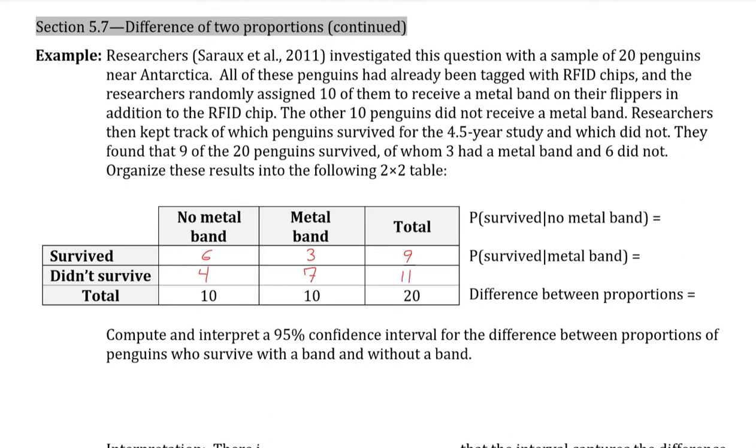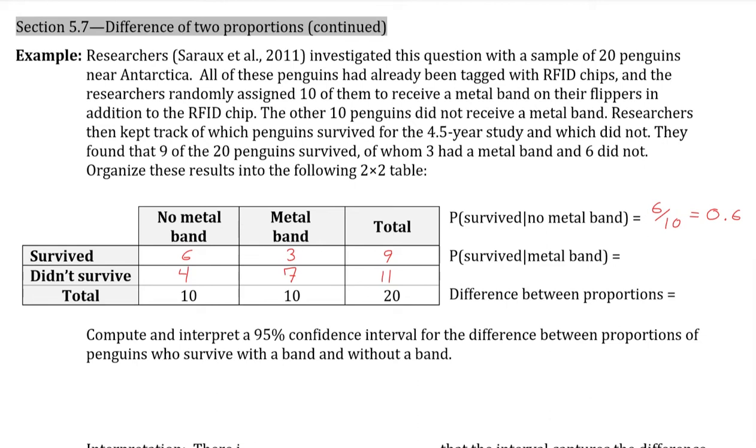On the right side here, we have a few probabilities. We have the probability of survived given no metal band, or on the condition of having no metal band. That means of the 10 individuals with no metal band, how many survived, which is 6 out of 10, or 0.6. For those that survived given metal band, we then have those 10 individuals with the metal band, how many of them survived.